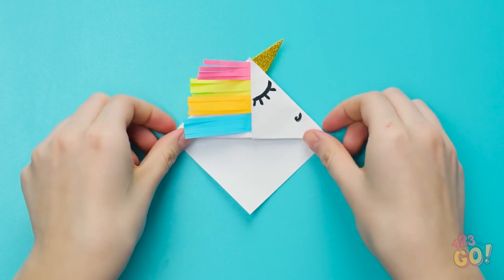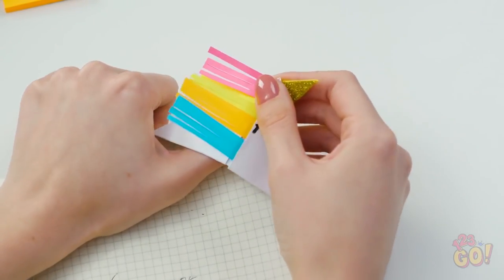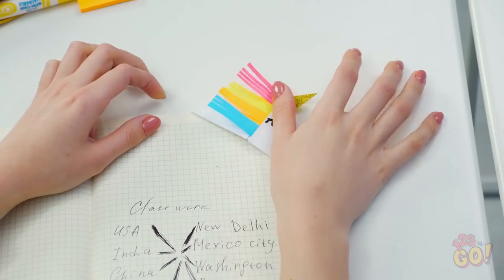Add the sparkly horn and you've got yourself a paper unicorn! Now you can keep the pages from your books and folders from curling! So cute! Thanks for the great tip, Lily!